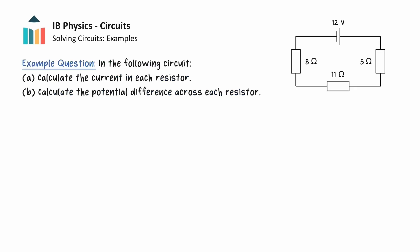In this first example, we need to calculate the current in each of the three resistors, and the potential difference across each resistor.